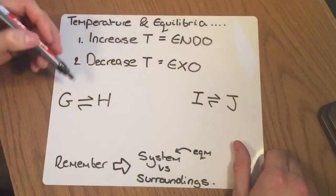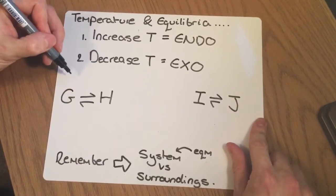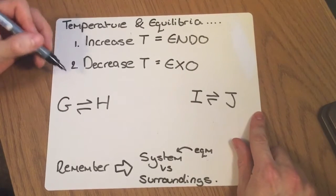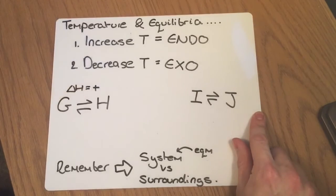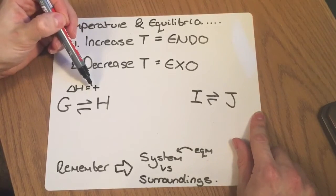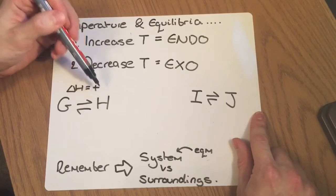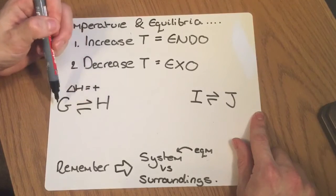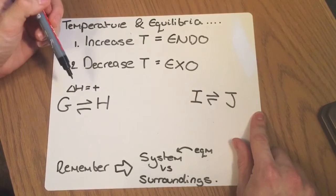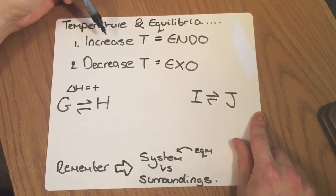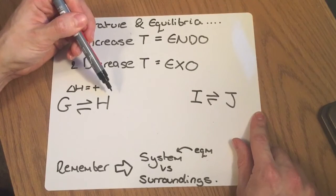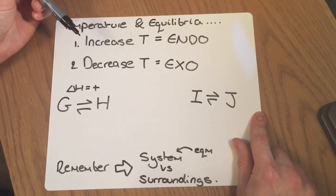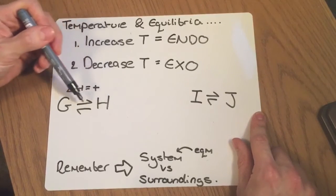So let's take these two examples. Let's say you're given this one in the exam and you're told that the delta H is positive. Now, what that tells me straight away is that the forwards reaction is endothermic and the backwards reaction is exothermic. So I know if I was to increase the temperature on this reaction, it would shift to the right. And if I was to decrease the temperature on this reaction, it would shift to the left.